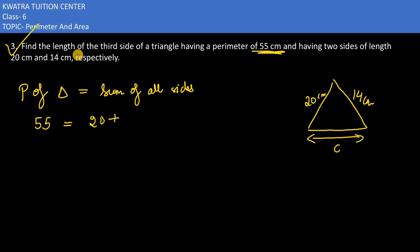20, if you add 14 to it and the third side, let it be c. Now here we have on the left side 55, 20 plus 14 is 34 plus c.